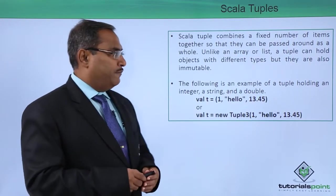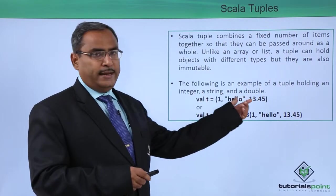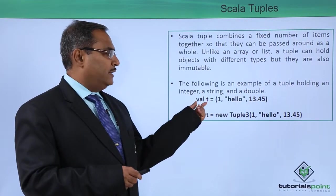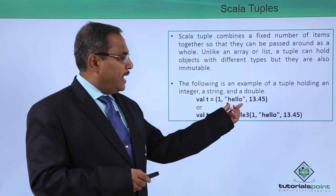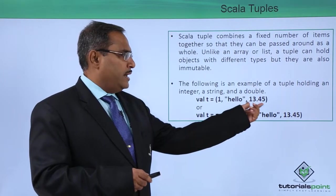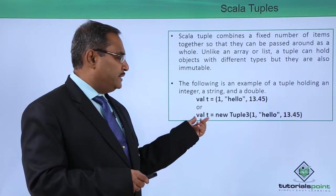The following is an example of a tuple holding an integer, a string, and a double. val t = (1, "hello", 13.45). So 1 is an integer, "hello" is a string, and 13.45 is a double.